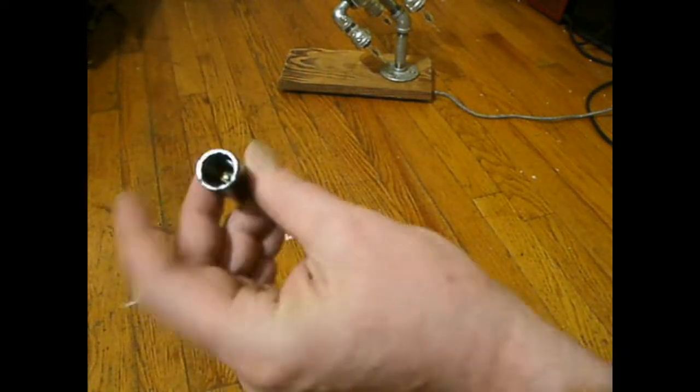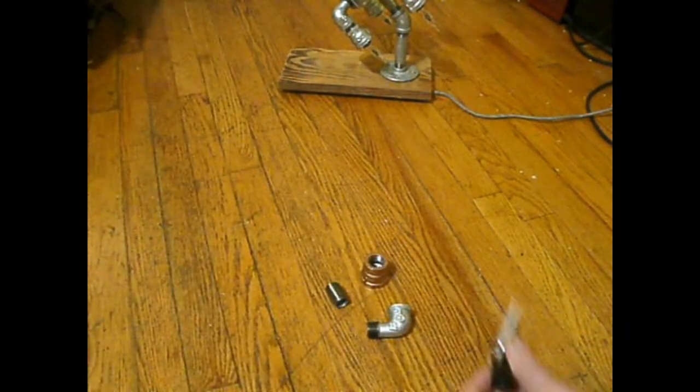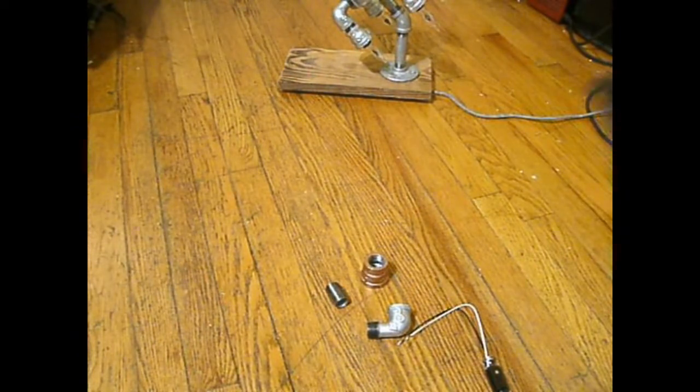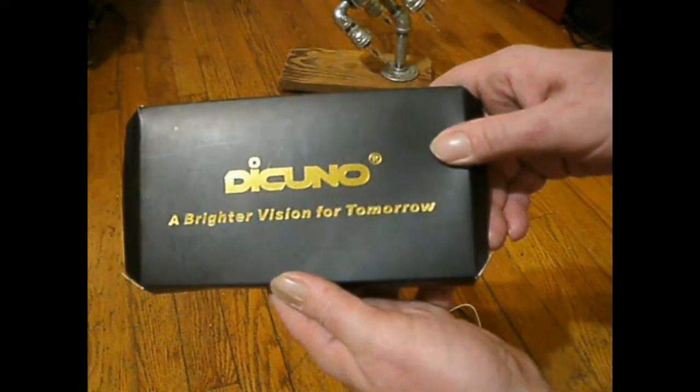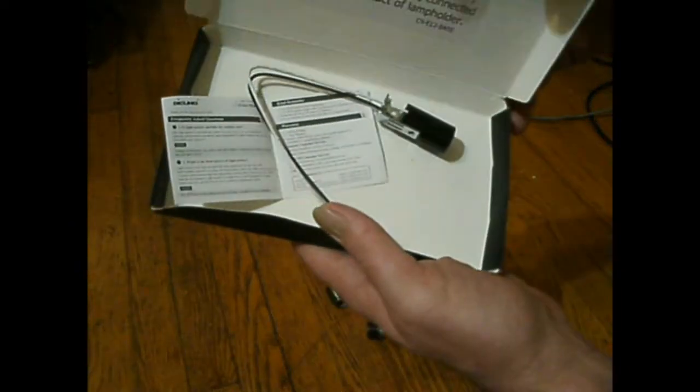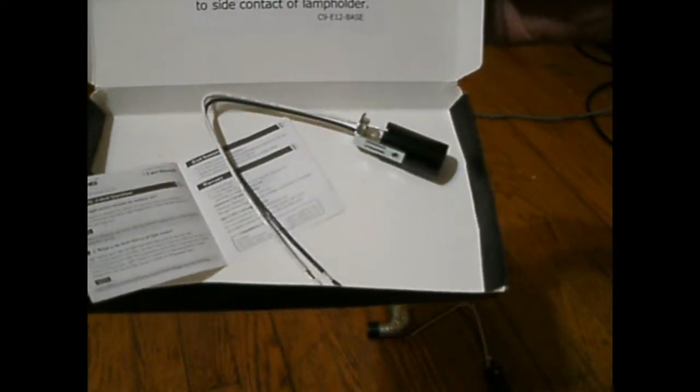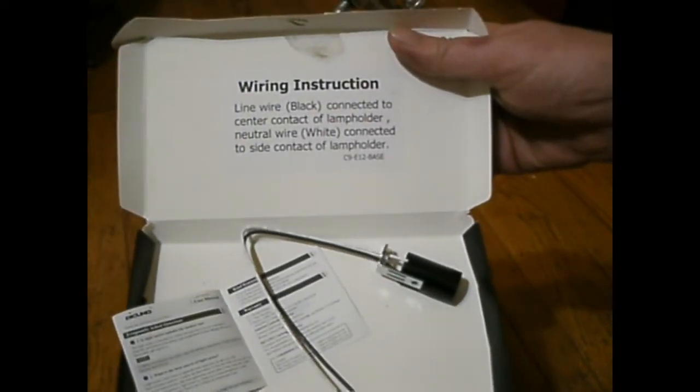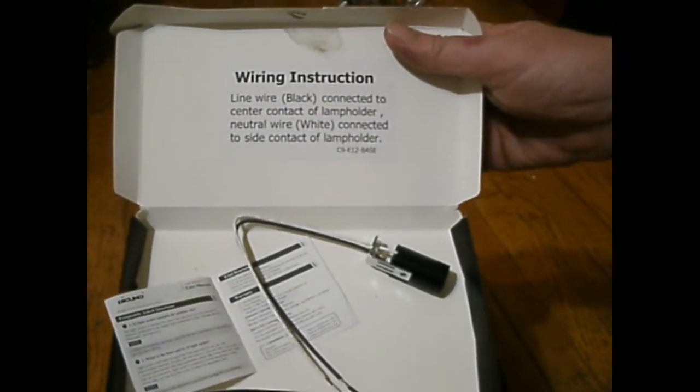And we got this. First of all, let's talk about the socket. So, I bought these on Amazon. This Daikuno, Dickuno, whatever. That is a C9 E12 base.